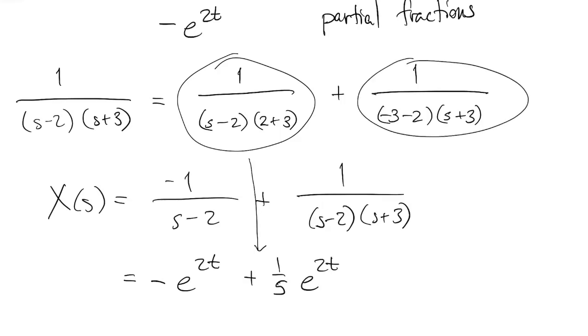And I have the inverse transform of negative 1 fifth times 1 over s minus 3. That's negative 1 fifth times e to the minus 3t. That whole thing is my solution, x of t.